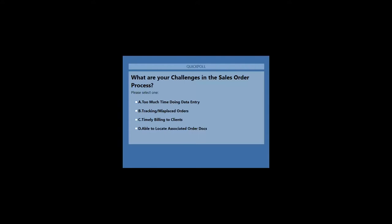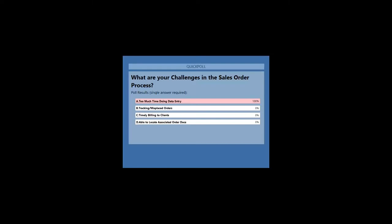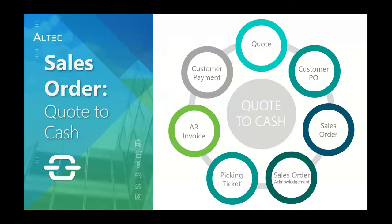Let's talk about the quote-to-cash scenario. Your typical process looks like this: it starts with a quote, a customer PO is generated into a sales order or acknowledgement, there are pick tickets, an AR invoice, and then customer payment. From quote to AR invoice, we can capture all this data and house it in the document repository. Once payment comes in, we can also house that payment remittance within DocLink, so you can see everything from the quote all the way to the customer payment.